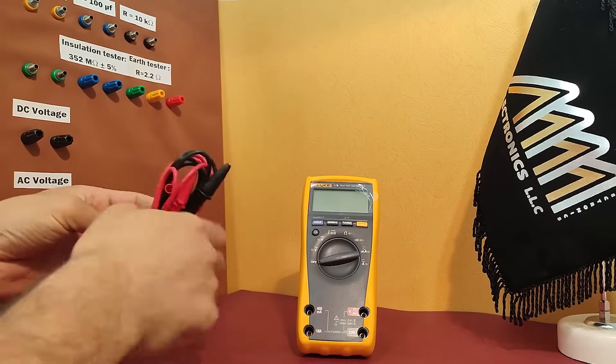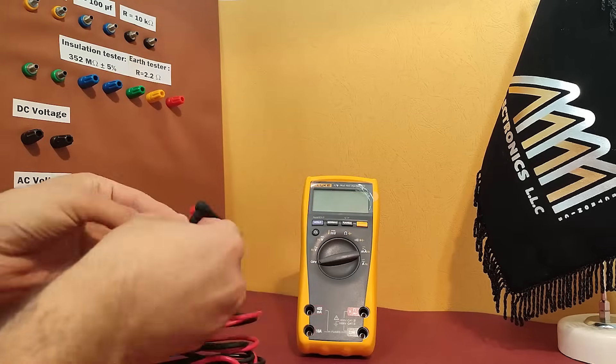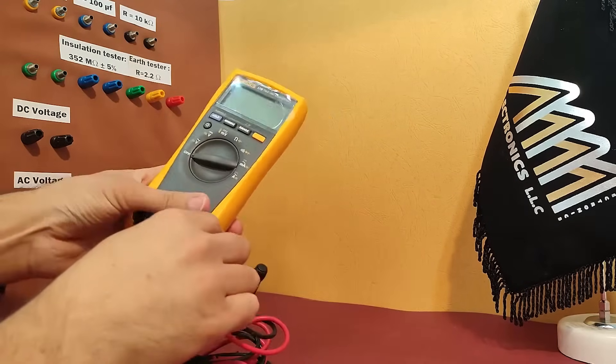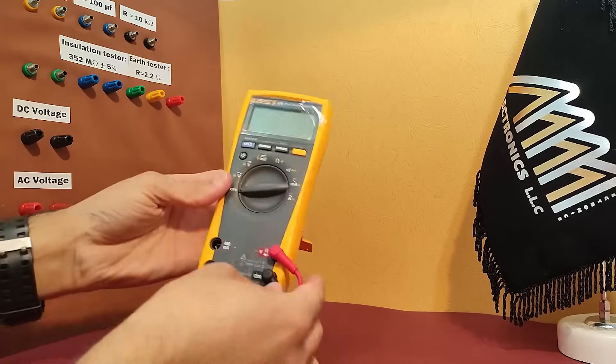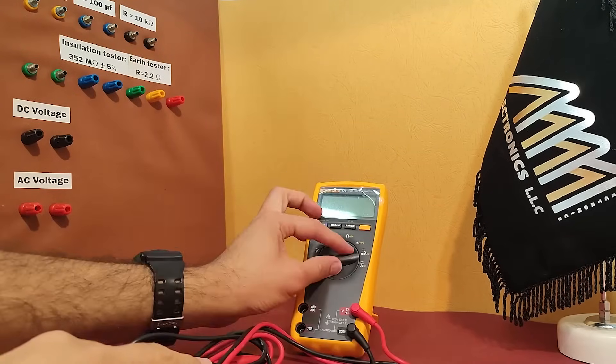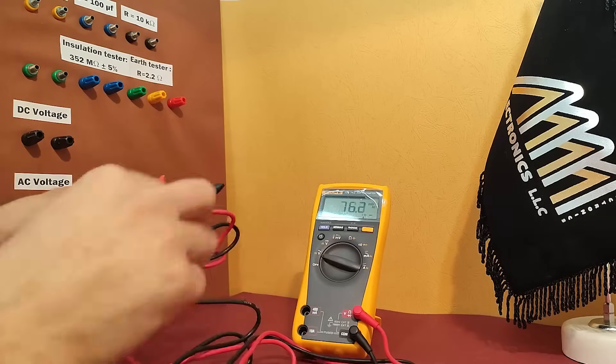To measure voltage with the FLOG 179 multimeter simply connect the leads to the component you want to measure. Make sure the red lead is connected to the positive side of the component and the black lead is connected to the negative side. The voltage will be displayed on the screen.